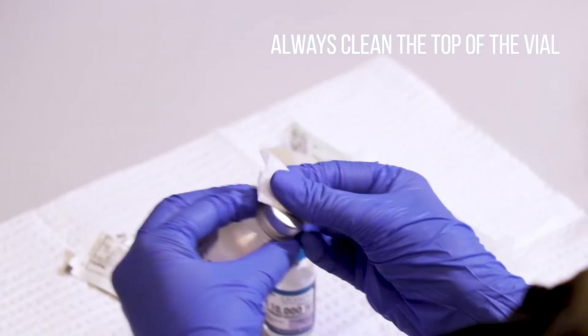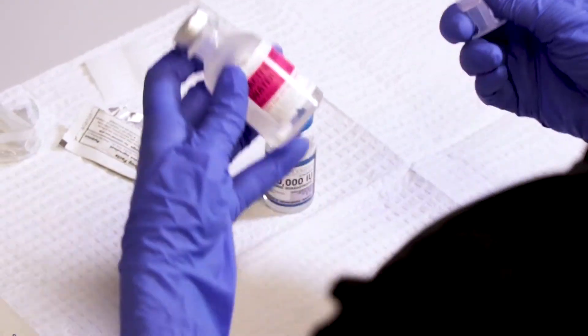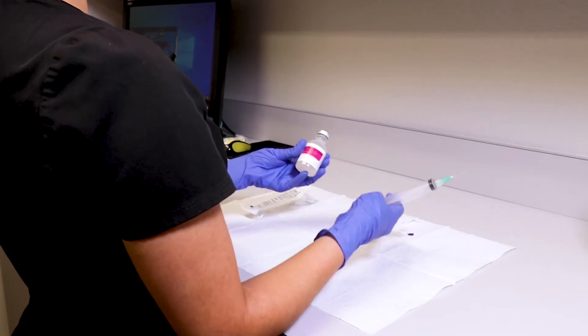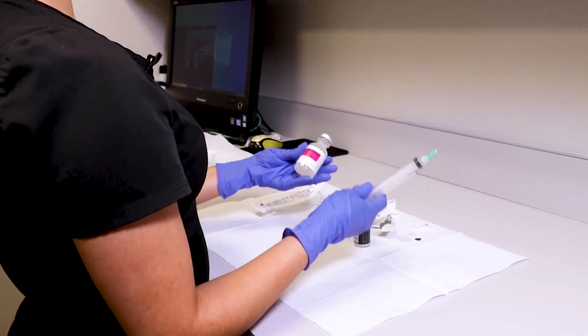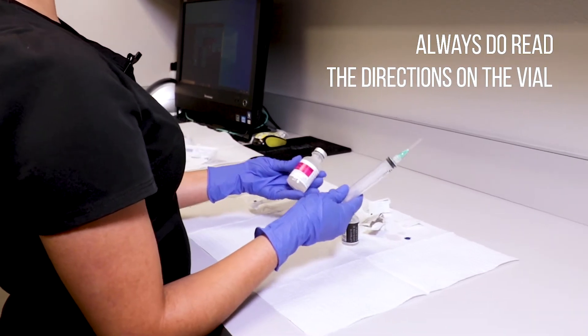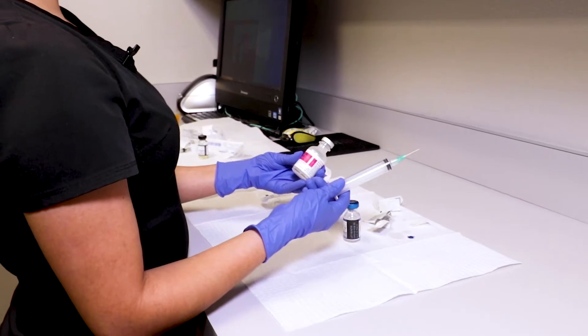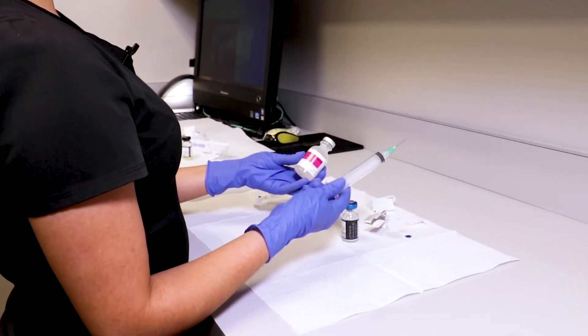The amount of bacteriostatic water you're drawing into the vial will depend on the type of medication you have as prescribed by the practitioner. Please always read the directions on the vial to see how many ml of bacteriostatic water you're reconstituting your medication with. In this case we're going to be doing 11ml.